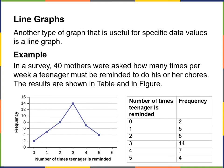Next, we're going to talk about line graphs. Another type of graph that is useful for specific data values is a line graph. Here's an example: in a survey, 40 mothers were asked how many times per week a teenager must be reminded to do his or her chores. The results are shown in this table.